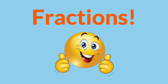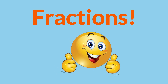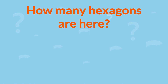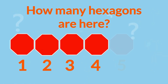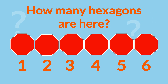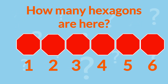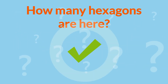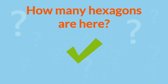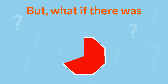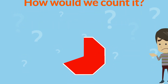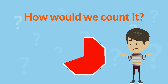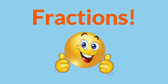Let's do some counting. How many hexagons are here? 1, 2, 3, 4, 5, and 6, correct? Well, this is easy to count, right? But what if there was just part of a hexagon? How would we count it? We'll use fractions.